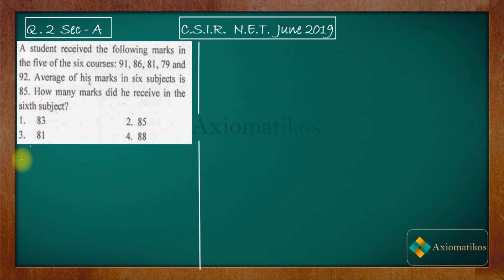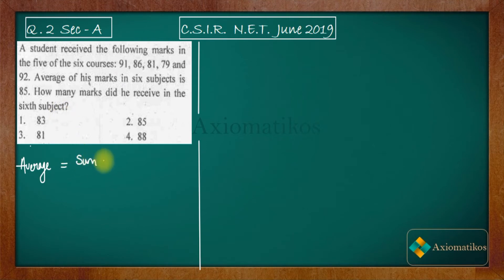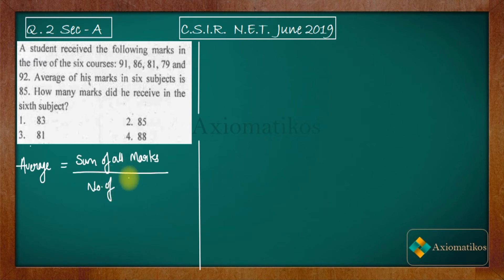Firstly, I want you to know the formula to find out average marks. The average of the total marks is given by the sum of all marks over the number of courses in which marks are allotted.